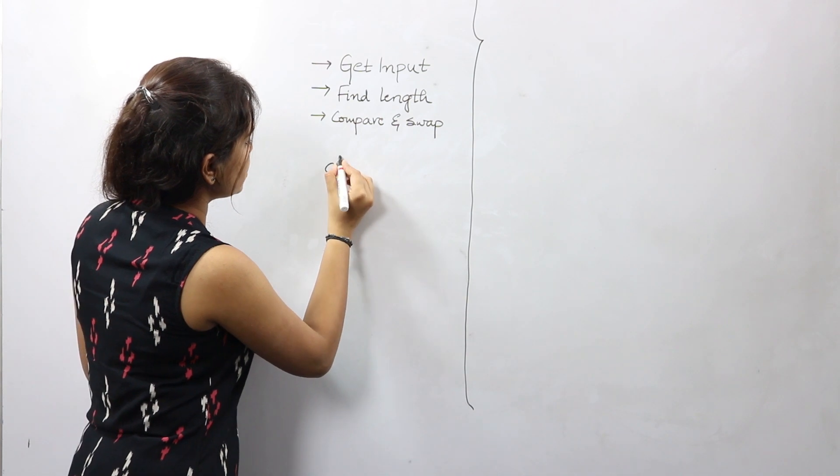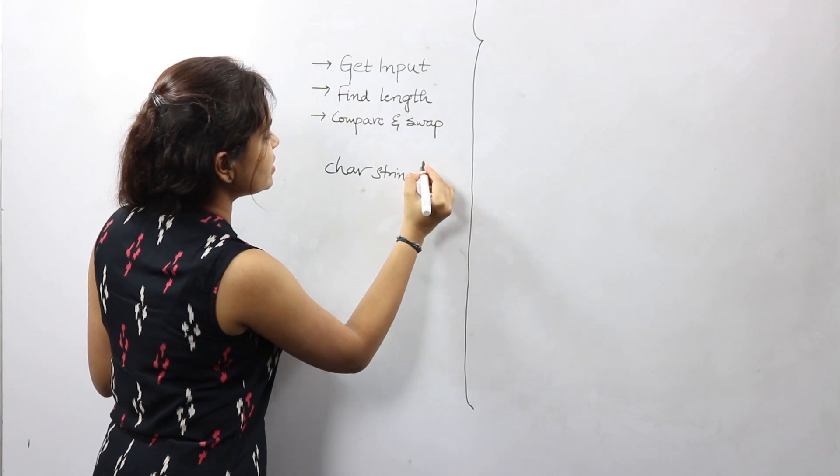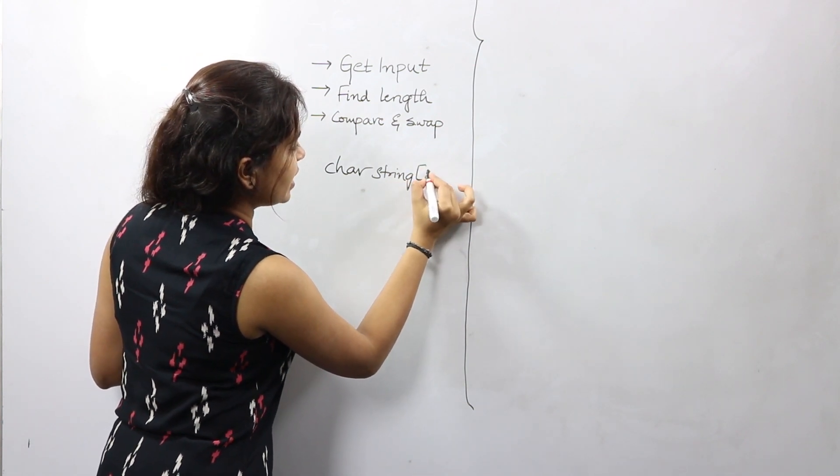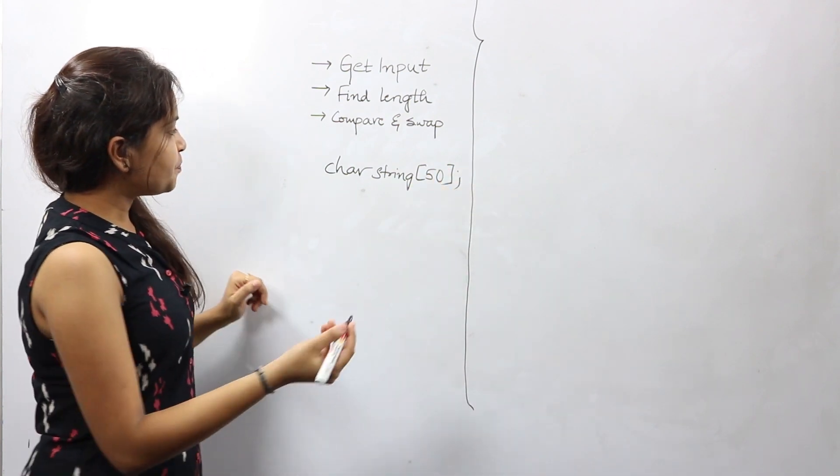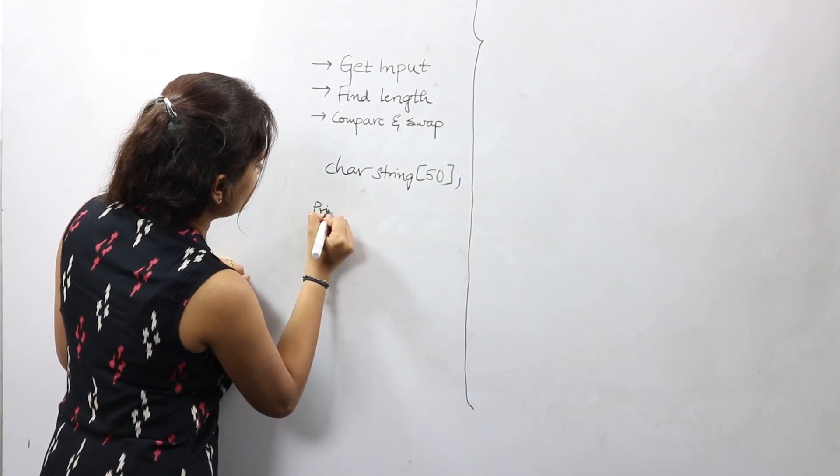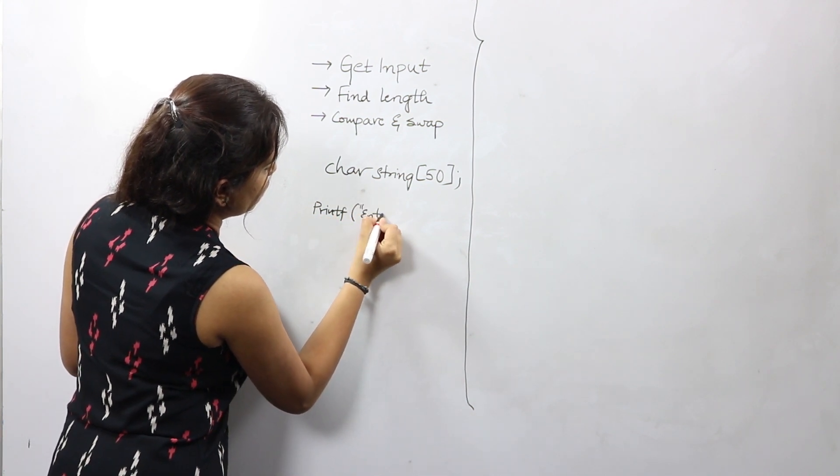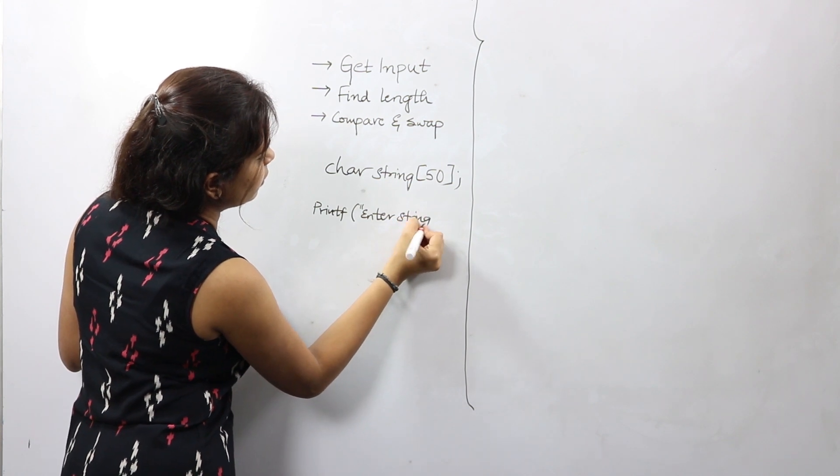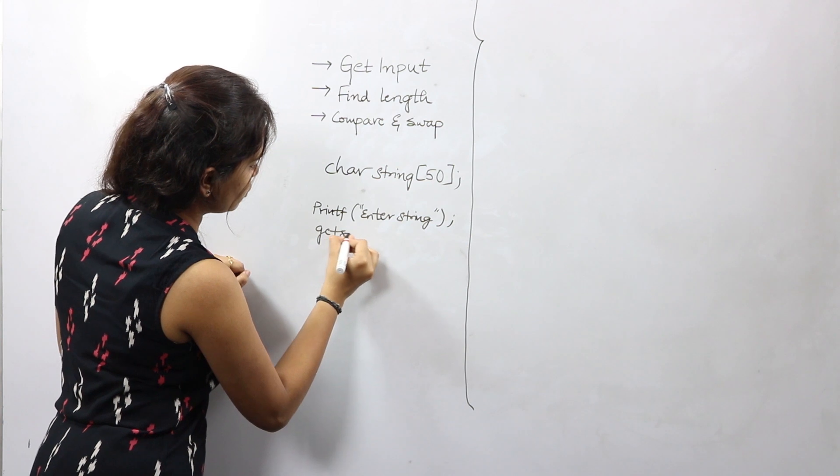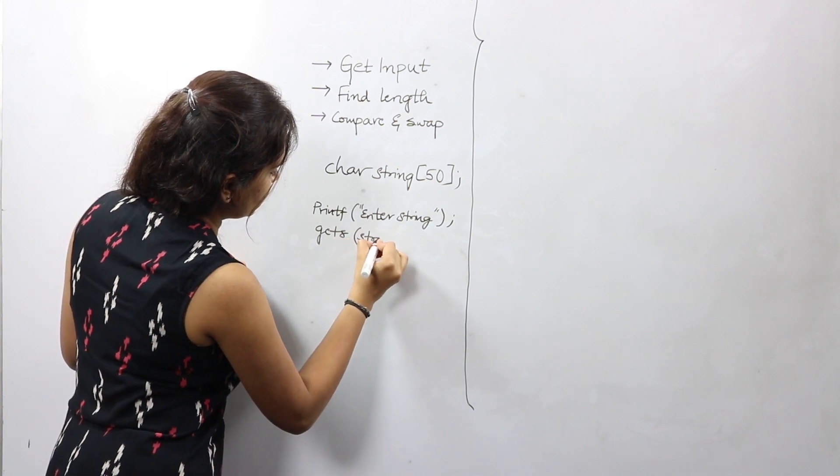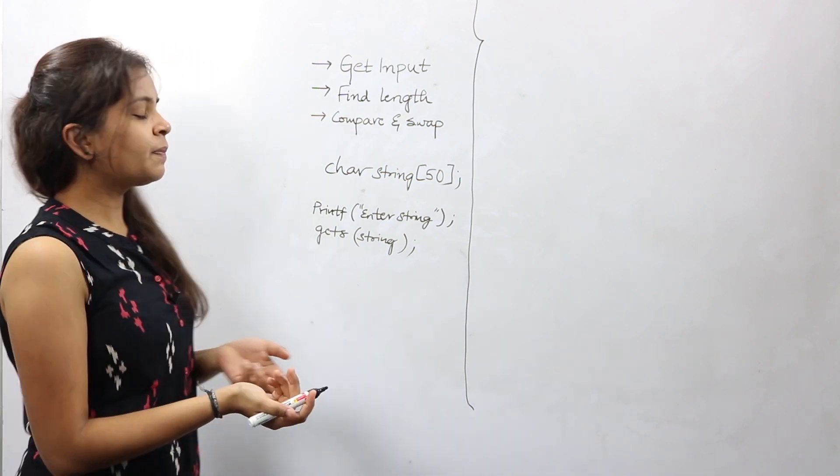For which I would declare a string. I would name the string 'string' itself. Let's say it can store 50 characters, and I would use gets to scan it: gets(string).